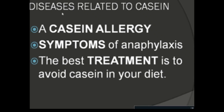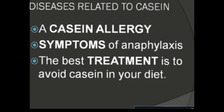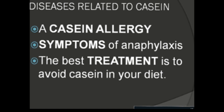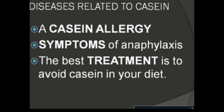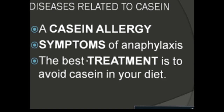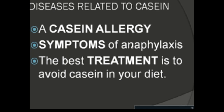What diseases are related to casein? The most common disease is casein allergy, in which the body's immune system activates against the milk protein, produces antibodies, and releases histamine, producing symptoms such as swelling of the lips, mouth, tongue, and face, skin reactions like rash, itchy skin, nasal congestion, runny nose, itching eyes, coughing, or wheezing. The most serious reaction is anaphylaxis, which is an emergency requiring immediate treatment with epinephrine. The best treatment is to avoid casein in the diet.